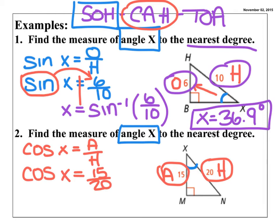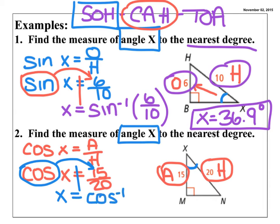We're trying to get X by itself, so I need to take the cosine and bump it to the other side of the equation. When I do that, it becomes an inverse function: X equals inverse cosine of 15 over 20. I press second and cosine, then 15 divided by 20, close parenthesis, and I end up with X equals 41.4 degrees. I always round to the nearest tenth on these.